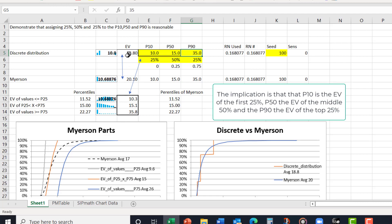Oh, I guess I should have pointed out here also, here's the expected value of the discrete distribution, and here's the expected value of the Myerson. And the percentiles, you can see, are the same.